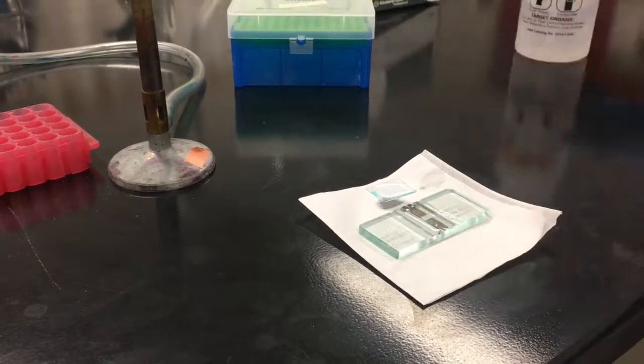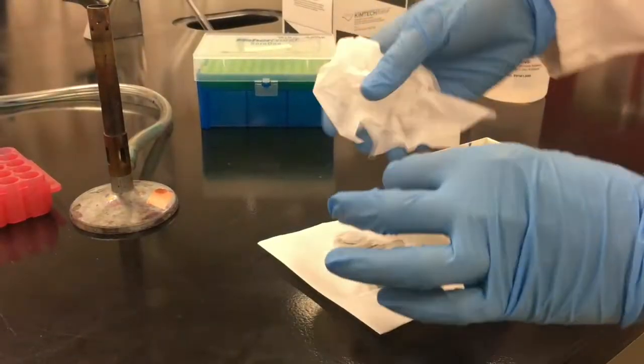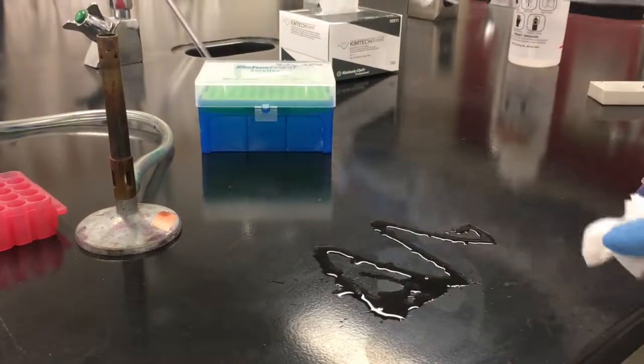Once counting is completed clean the hemocytometer and the cover slip with 70% ethanol and place it back into its box. Clean the surface of your bench with 70% ethanol before leaving.